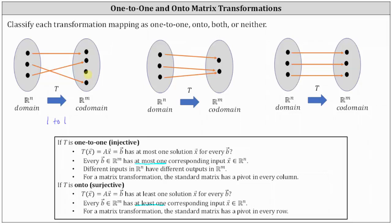Now looking at the second mapping, notice how we have two vectors in our M, where the first vector has one corresponding input and the second vector has two corresponding inputs. So because the second vector has two corresponding inputs, it does not meet the requirements for a one-to-one transformation, where there can be at most one corresponding input vector for each vector B in our M. So it's not one-to-one. However, it is an onto transformation because every vector in our M does have at least one corresponding input in our N.